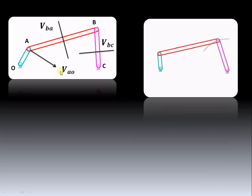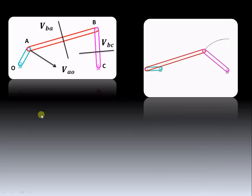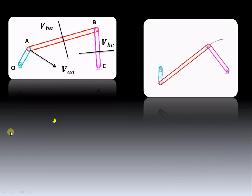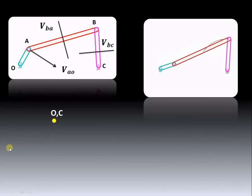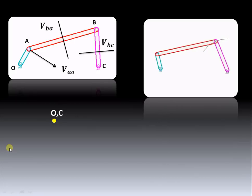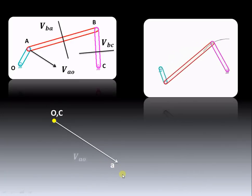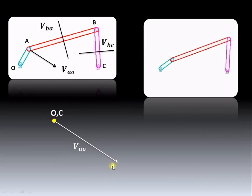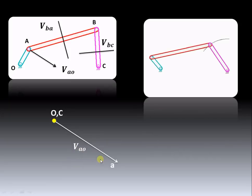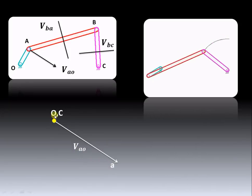We first calculate the velocity V_AO from the given data and draw this vector to a suitable scale. In the diagram space, first consider the fixed points O and C. To a suitable scale, draw the vector V_AO perpendicular to OA. Since we are finding the velocity of A with respect to O, the arrow will be towards A — so the first letter is A, confirming we are finding velocity of A with respect to O.